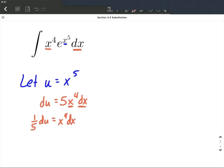Now what we're going to do is go ahead and replace things in. So we have an integral. We're going to have e to the u power, and then the x to the fourth dx is going to get replaced with 1 fifth du. Now I typically write the du at the end. And because that constant, the 1 fifth, is just a number, I'm going to put that outside of the integral symbol.